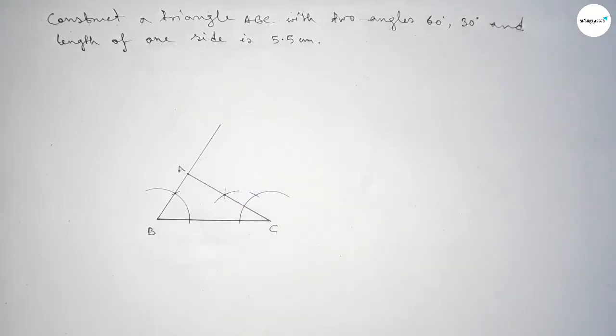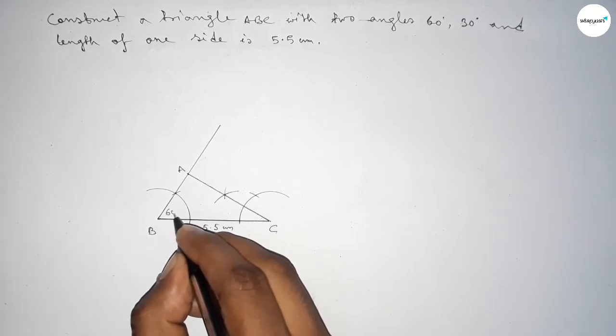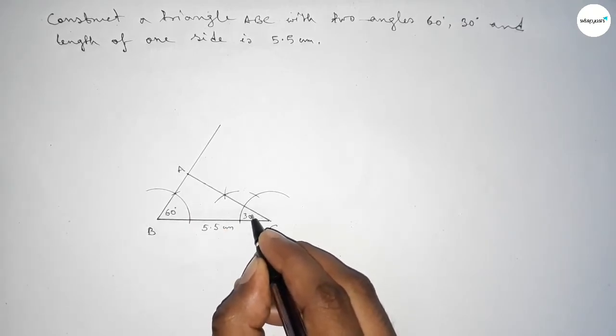So this side is 5.5 centimeters and this angle is 60 degrees and this angle is 30 degrees and angle A is obviously 90 degrees.